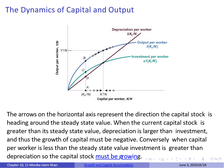The arrows on the horizontal axis represent the direction capital stock is heading around its steady state value. When the current capital stock is greater than its steady state value, depreciation at that point exceeds investment. As a result, the growth rate of capital must be negative, because more is being depreciated than is being invested.